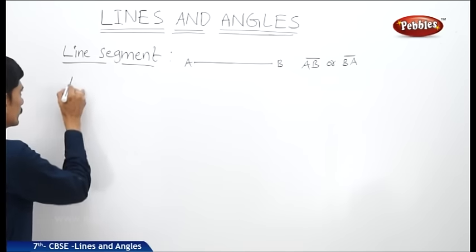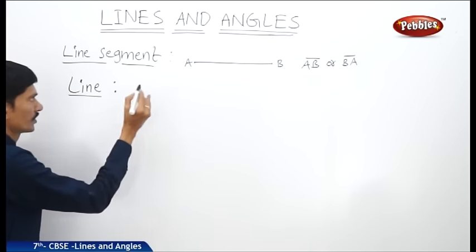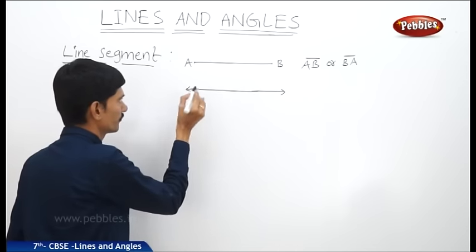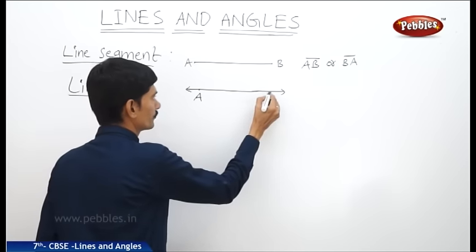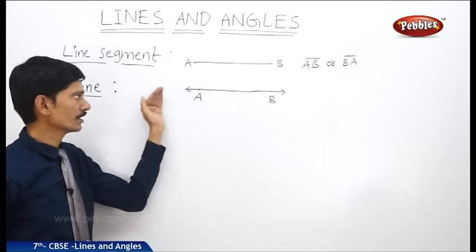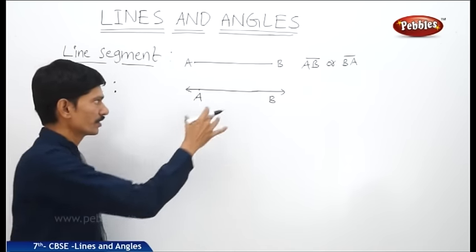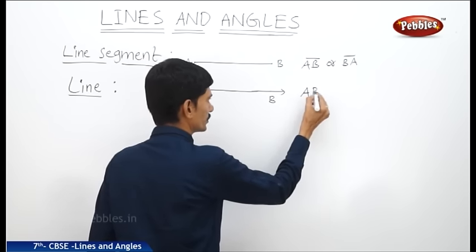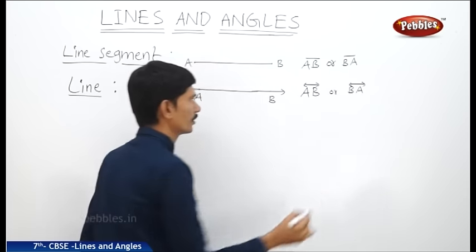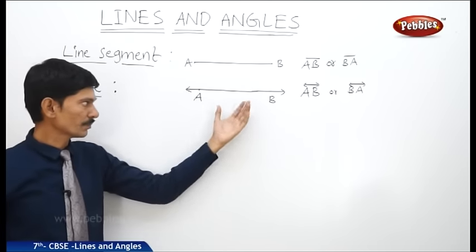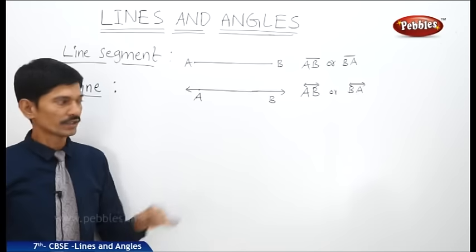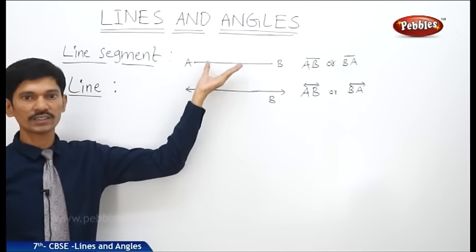What is a line? If a line segment can be extended on either side, in either direction indefinitely, then the figure is called a line. The line segment from A to B can be extended in both directions indefinitely, so this figure is called a line. The line AB is represented as AB or BA. It has no end points on either side and has no definite length, whereas a line segment has a definite length.